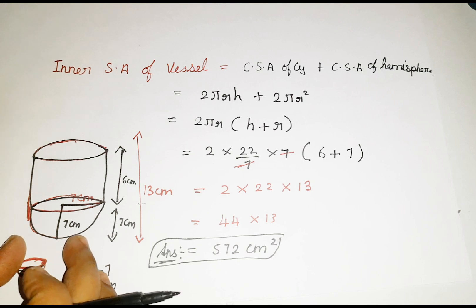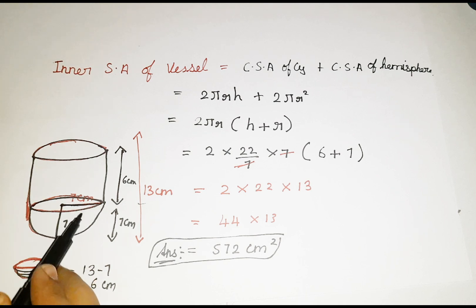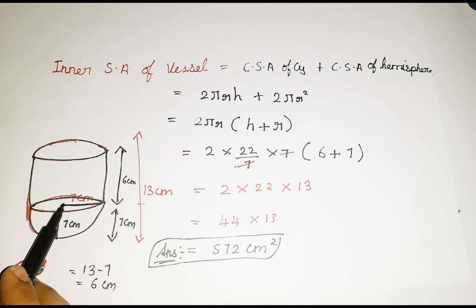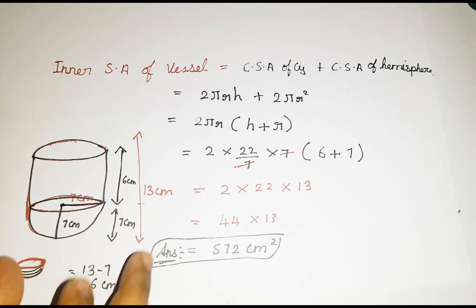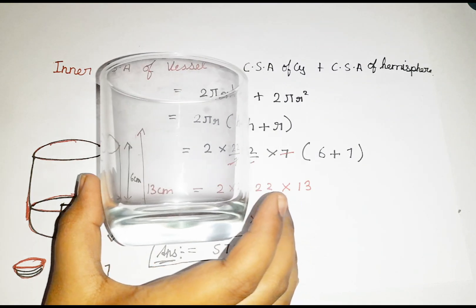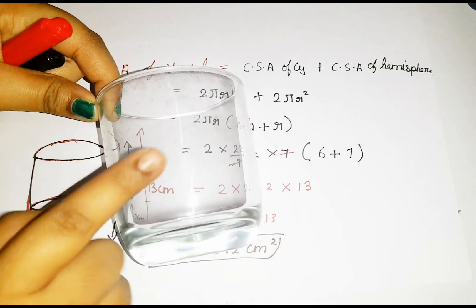Remember: for hemisphere, we have radius, not height. If you know the radius of the hemisphere, for the entire joined figure it will be the same value. The radius for cylinder as well as hemisphere is the same — 7 centimetre. So a glass cup consists of a hemisphere and a cylinder.